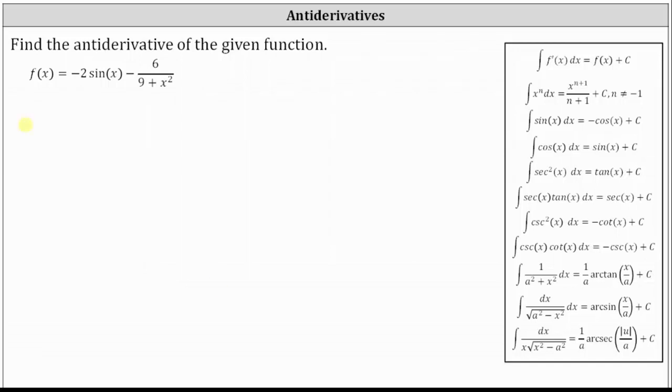The antiderivative is equal to the indefinite integral of negative two sine x minus six divided by the quantity nine plus x squared with respect to x. And now we will refer to the antiderivative or integral formulas shown here on the right.